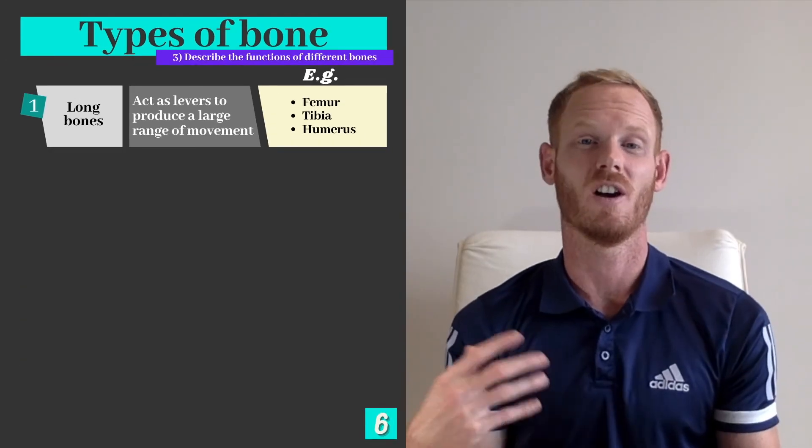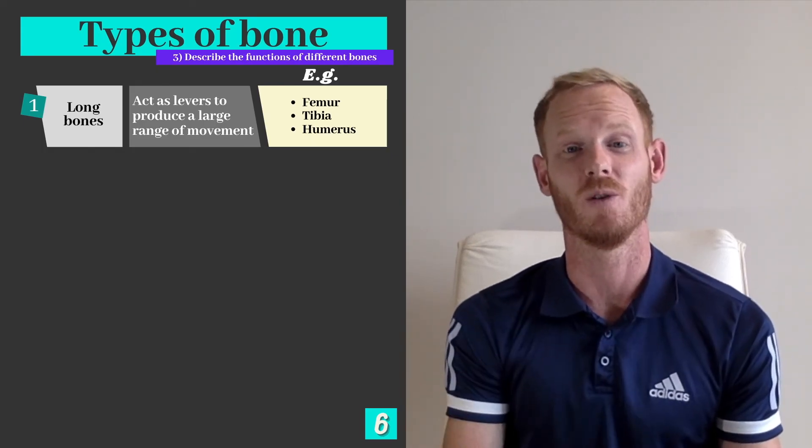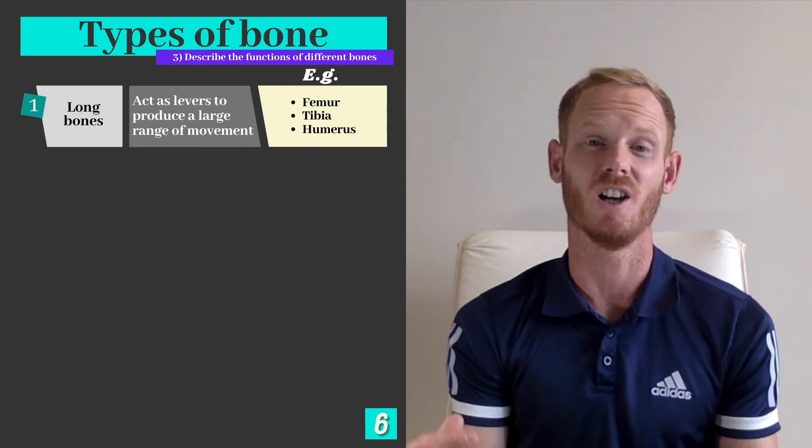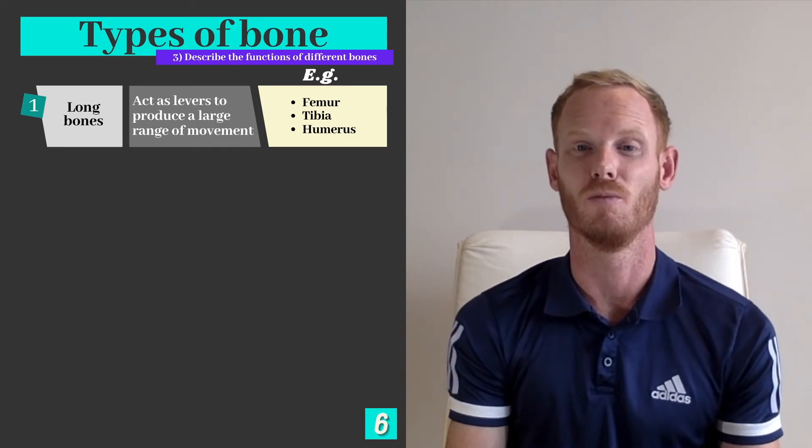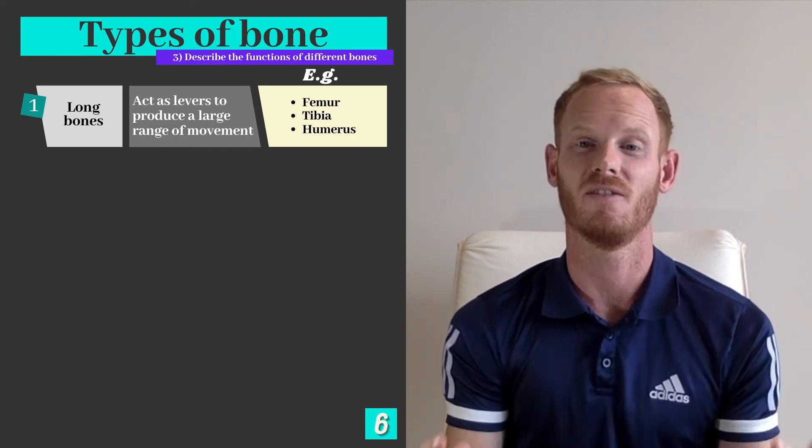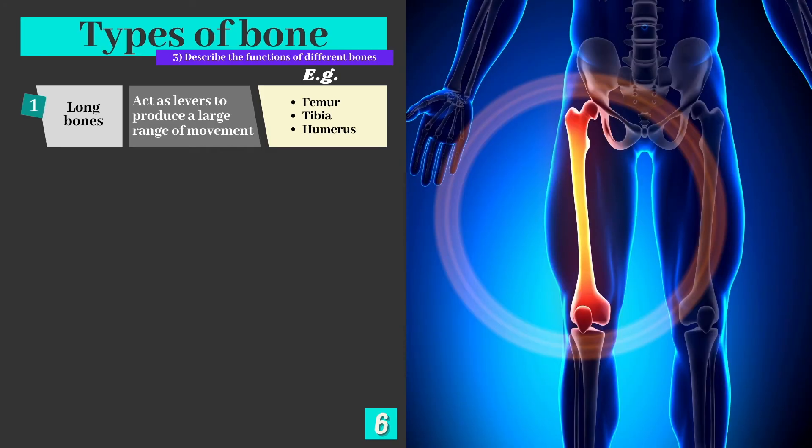Now we're already on our final learning objective, which is to describe the functions of different bones. The first type of bones, which I've already referred to, are long bones. Now these act as levers to produce large range of movement within the human body and are usually found in the limbs. Examples include the femur, the tibia and the humerus bones.